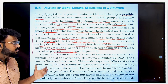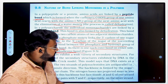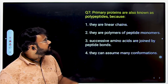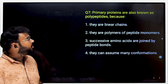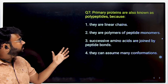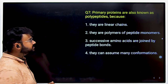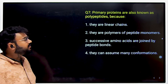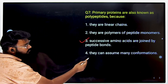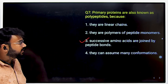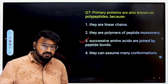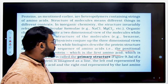Nitrogenous bases are held by hydrogen bonds. The next question: primary proteins are also known as polypeptides — why? They are polymers of peptide monomers, or successive amino acids are joined by peptide bonds. The third option is correct — not because they are linear chains or can assume many conformations.